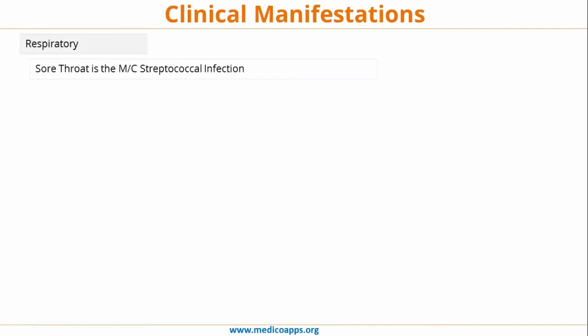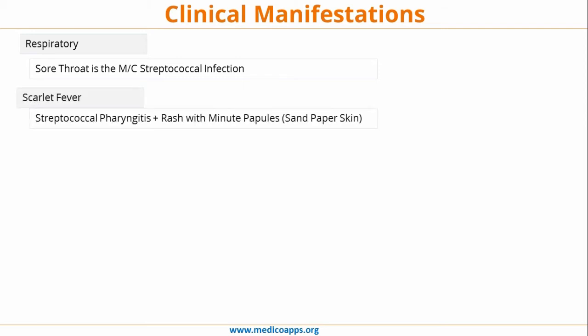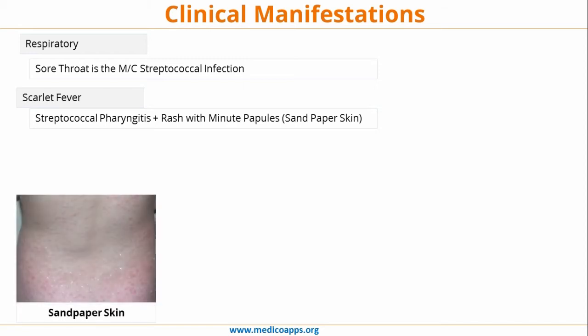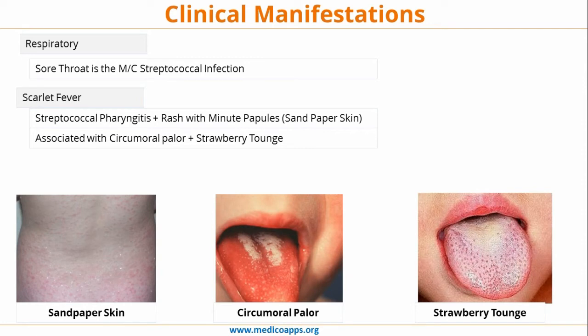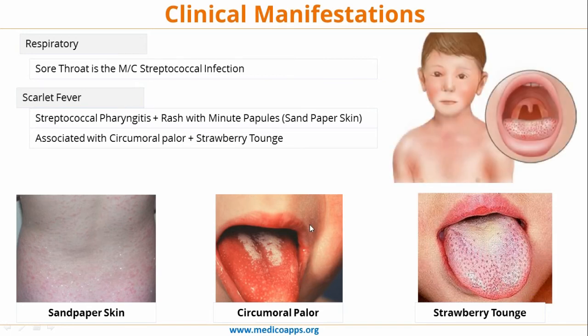Clinical manifestations: sore throat is the most common streptococcal infection. Scarlet fever is streptococcal pharyngitis with rash with minute papules which give the skin a sandpaper appearance. In scarlet fever you can also see circumoral pallor and strawberry tongue. These images illustrate the strawberry tongue and the circumoral pattern, along with the sandpaper appearance of the skin.